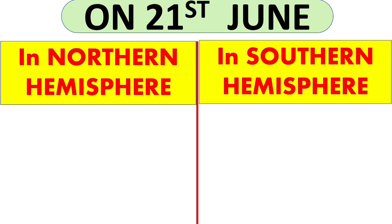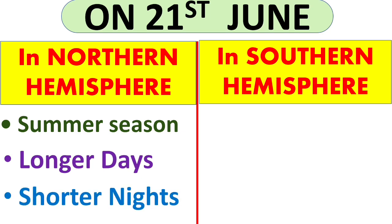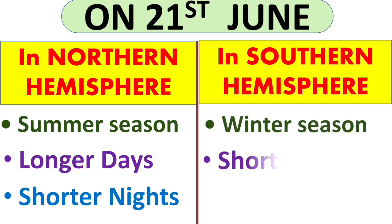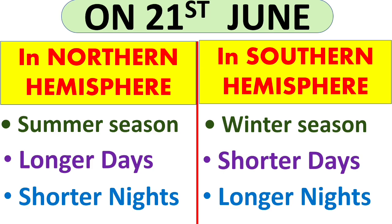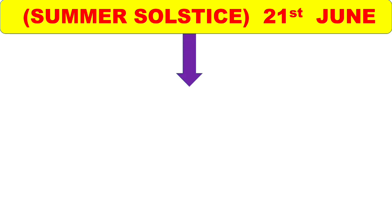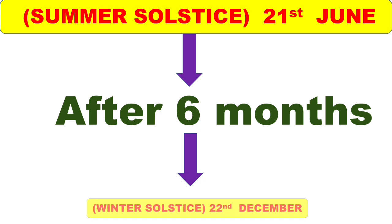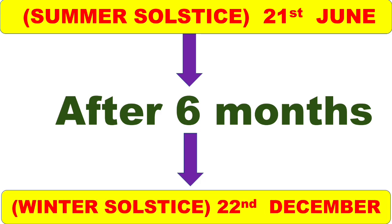On 21st June, in the northern hemisphere it is summer with longer days and shorter nights. But on the same day, in the southern hemisphere, all three conditions are reversed — it is winter season in the southern hemisphere with shorter days and longer nights. After six months there will be winter solstice on 22nd December in the northern hemisphere, meaning the season changes from summer to winter.